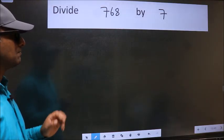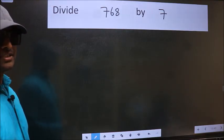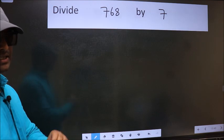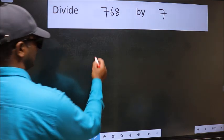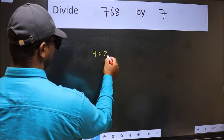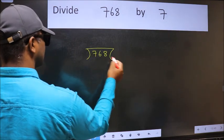Divide 768 by 7. To do this division, we should frame it in this way: 768 here and 7 here.